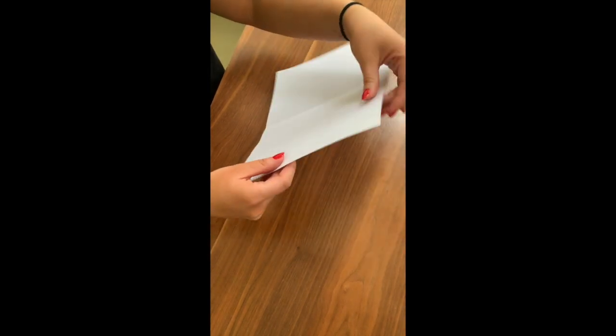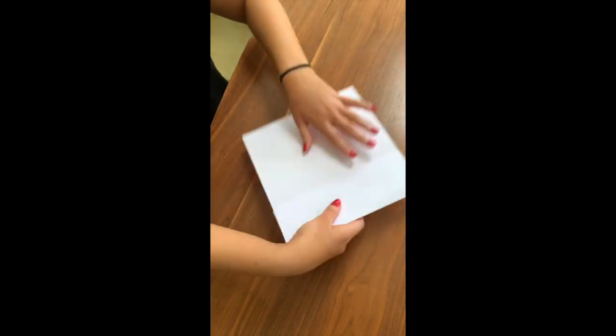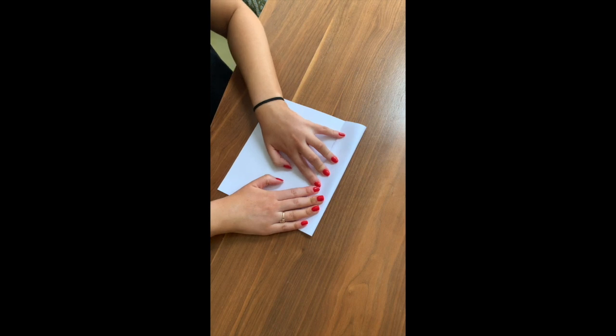We need to make a little crease in between the 7.5 and the 15, so I'm going to fold it over and make sure that the 7.5 crease and the 15 crease meet and fold it again.